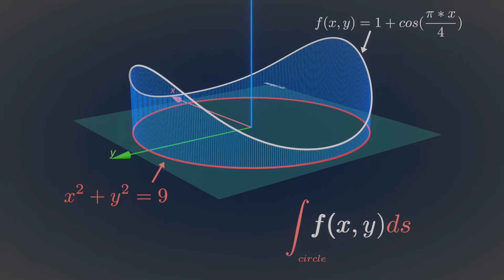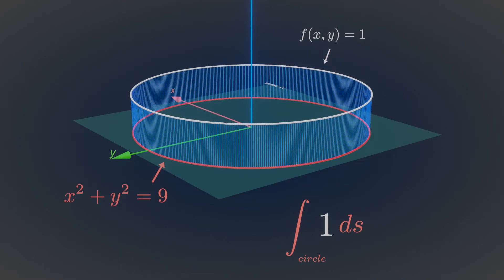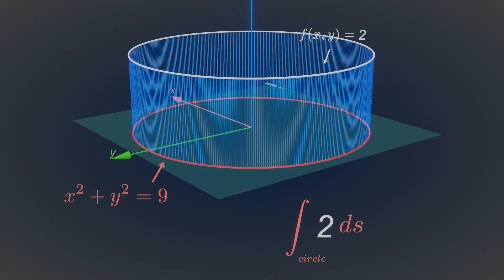Now, here is an interesting thing. If you change this formula's height function to some constant value, let's make it 1, then you will get the area of this cylinder. In this case, every stick got the height 1. Its height is directly proportional to the magnitude of this constant.